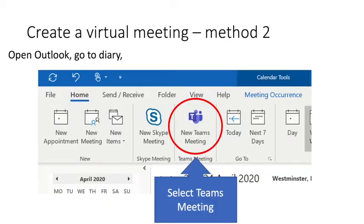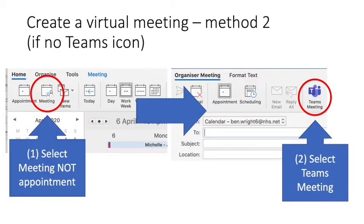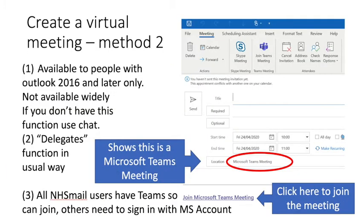The second method: in Outlook, go into your diary and select a new Teams meeting. For many people this may not be visible if you don't have Office 2016. If it isn't visible, go to Meeting - not Appointment - and then select Teams meeting. This will create an appointment with the location as Microsoft Teams. If you don't have this function, use the chat function. Remember, delegates can create meetings for Microsoft Teams in the usual way.